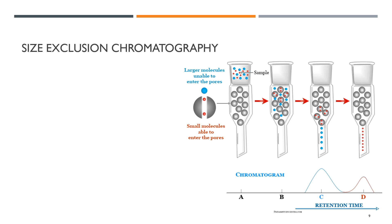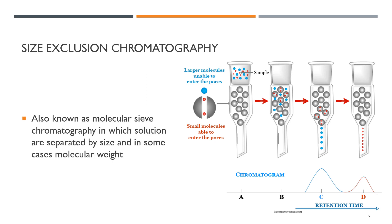Size exclusion chromatography, as the name indicates, separates based on size. It is also known as molecular sieve chromatography, in which solutions are separated by size and in some cases molecular weight. You can see in the figure that the blue and red components are separated out on the basis of size.